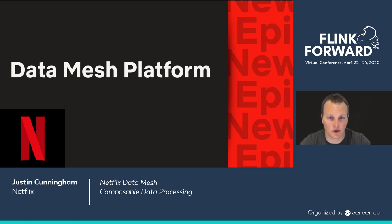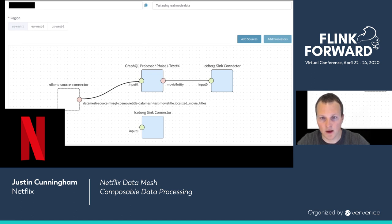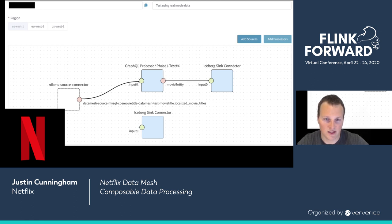Next I want to show a little of what the data mesh platform looks like today in a kind of pre-alpha state. This is a view of a basic pipeline pulling data from a relational database source, feeding it through a GraphQL enricher, and then outputting it to Iceberg. Apache Iceberg is a Netflix open source project — it's a table format for huge analytical datasets and it powers the Netflix data warehouse. This particular pipeline is dealing with movie data, using CDC events (change data capture) as triggers, which cause movie entities to be pulled from GraphQL and transported into the data warehouse.